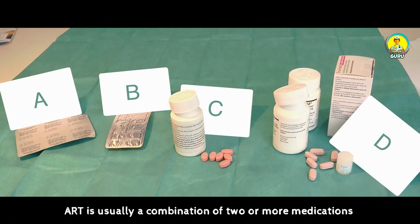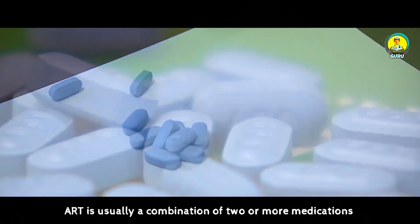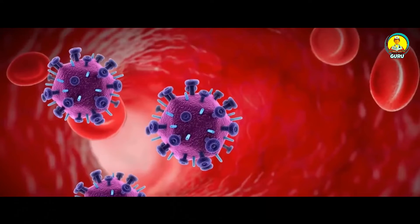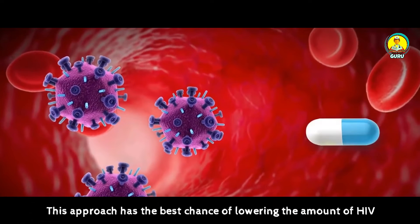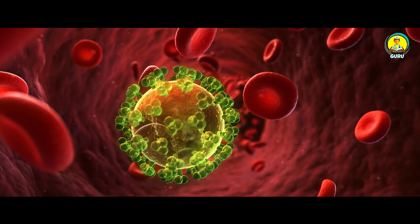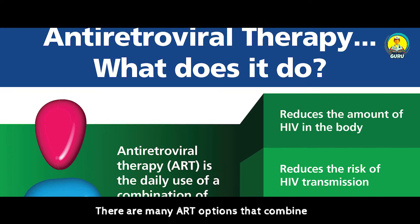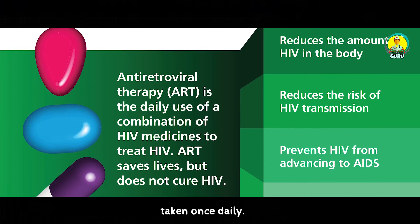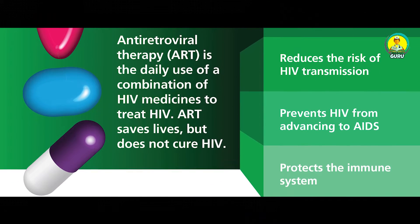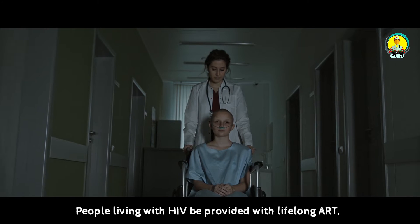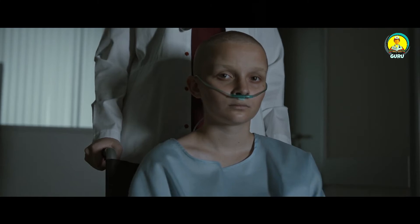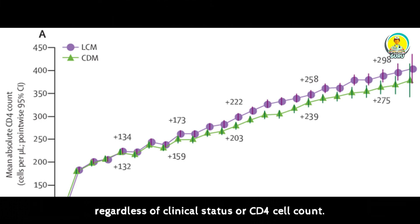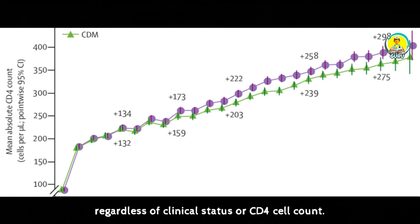ART is usually a combination of two or more medications from several different drug classes. This approach has the best chance of lowering the amount of HIV in the blood. There are many ART options that combine multiple HIV medications into one pill taken once daily. People living with HIV — including children, adolescents, adults, and pregnant and breastfeeding women — will be provided with lifelong ART regardless of clinical status or CD4 cell count.